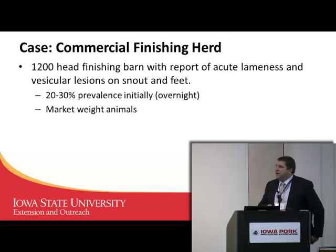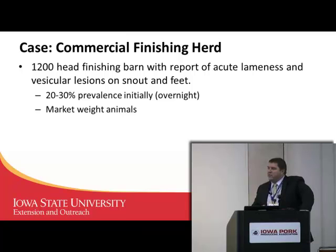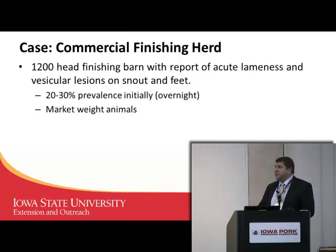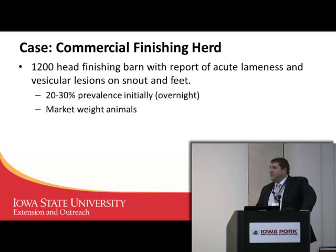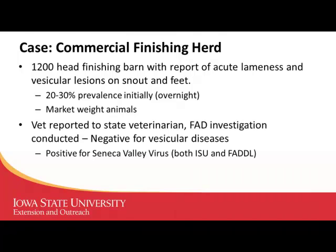As Dr. Schmidt talked about, the first couple of cases were in exhibition swine, but near the end of July there was a finishing barn with a report of acute lameness and vesicular lesions on the snout and feet. What was nerve-wracking about it was the prevalence was really high — the producer said he looked at them Wednesday night and they were fine, then Thursday morning he had four or five pigs in every pen that wouldn't get up at all. These were market-weight animals getting ready to go to market, which created another issue.